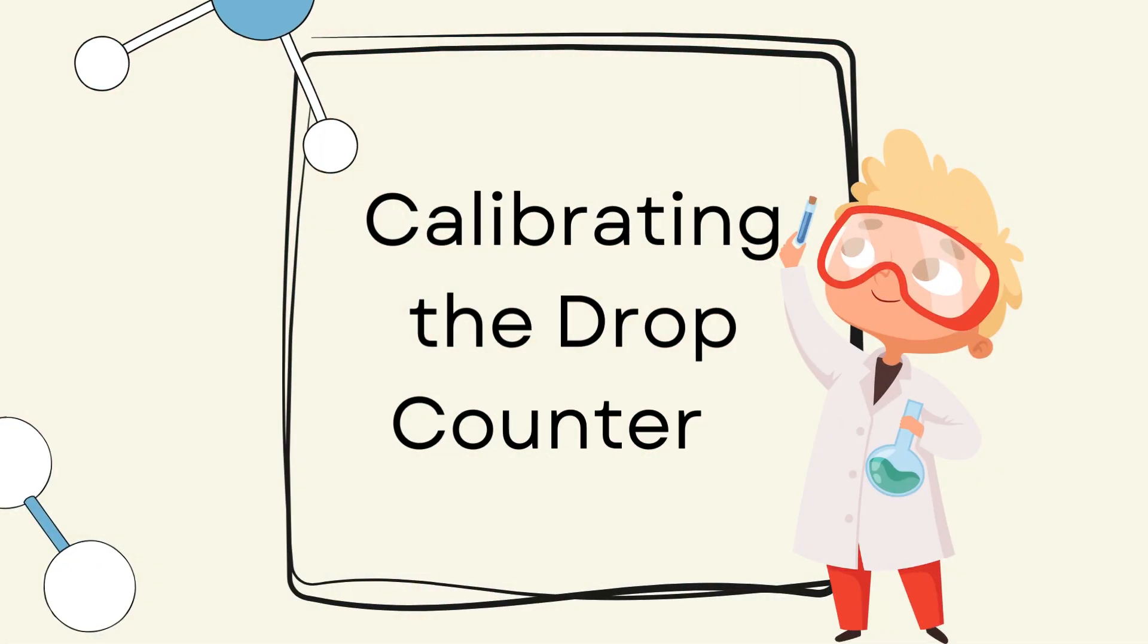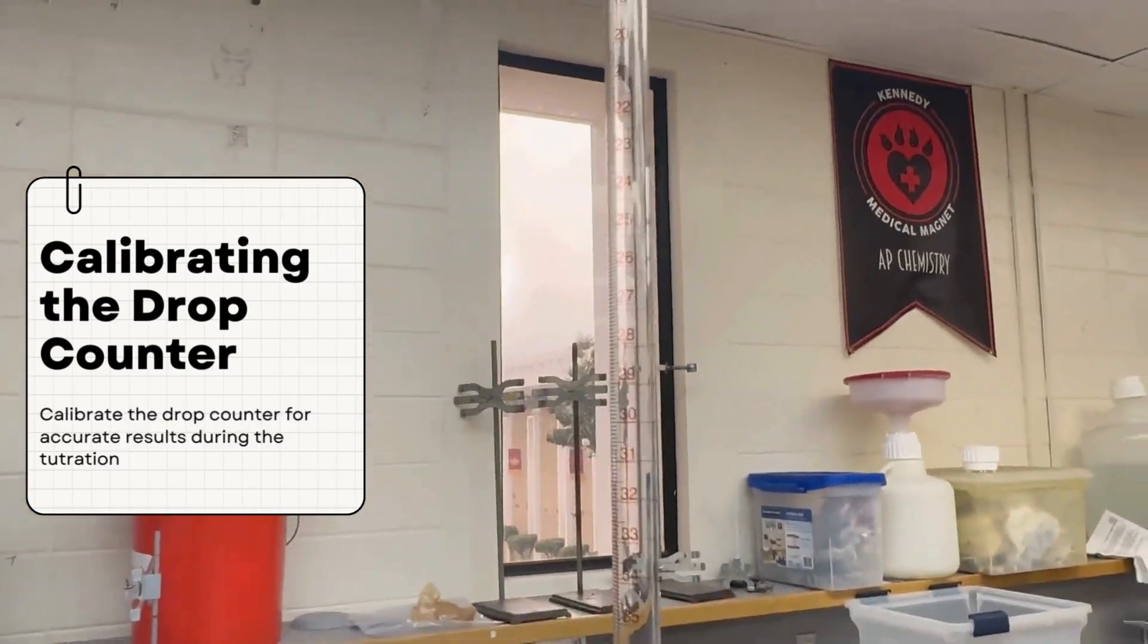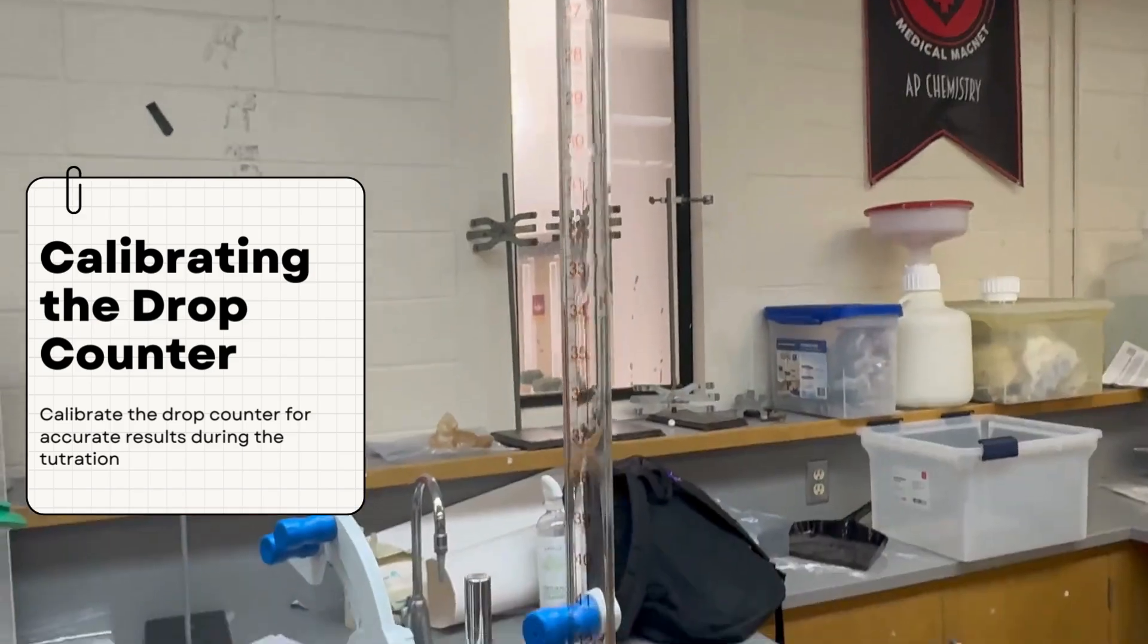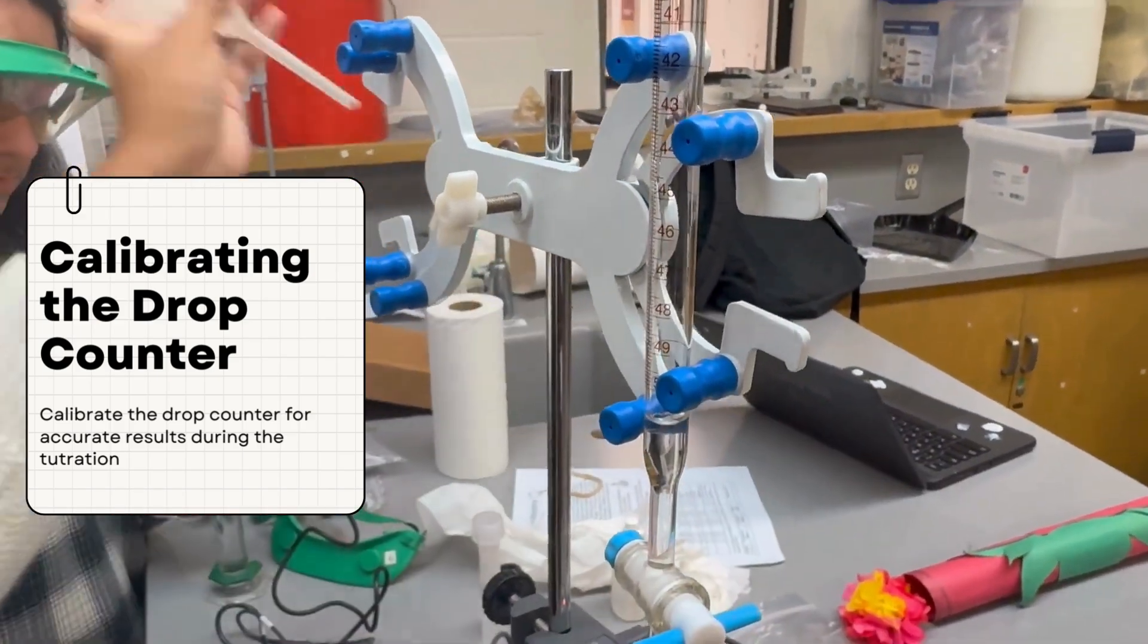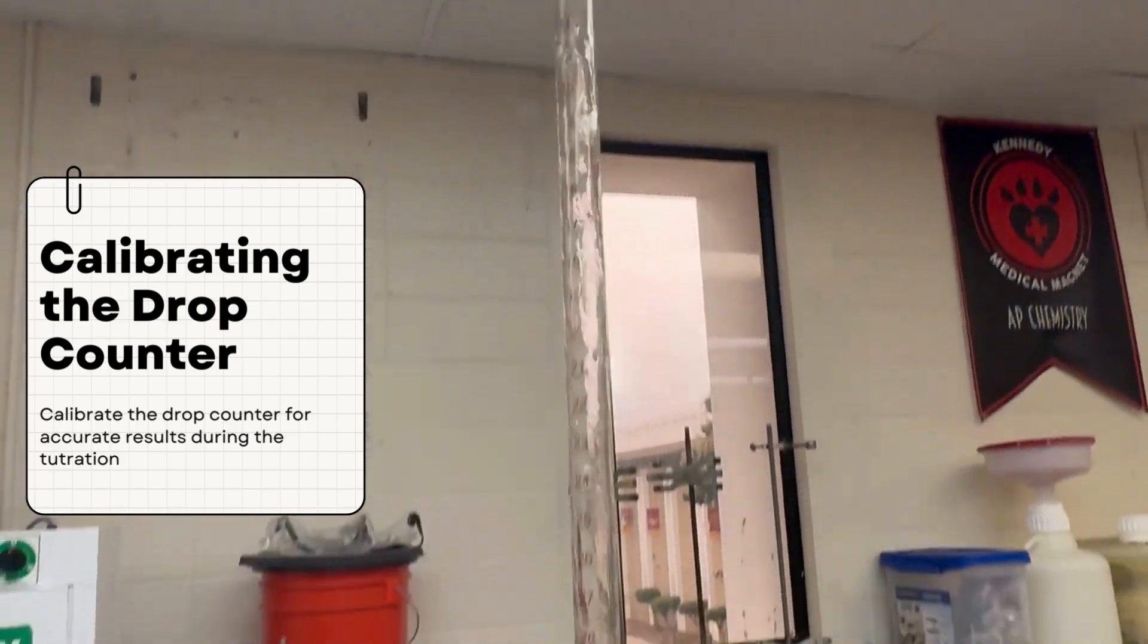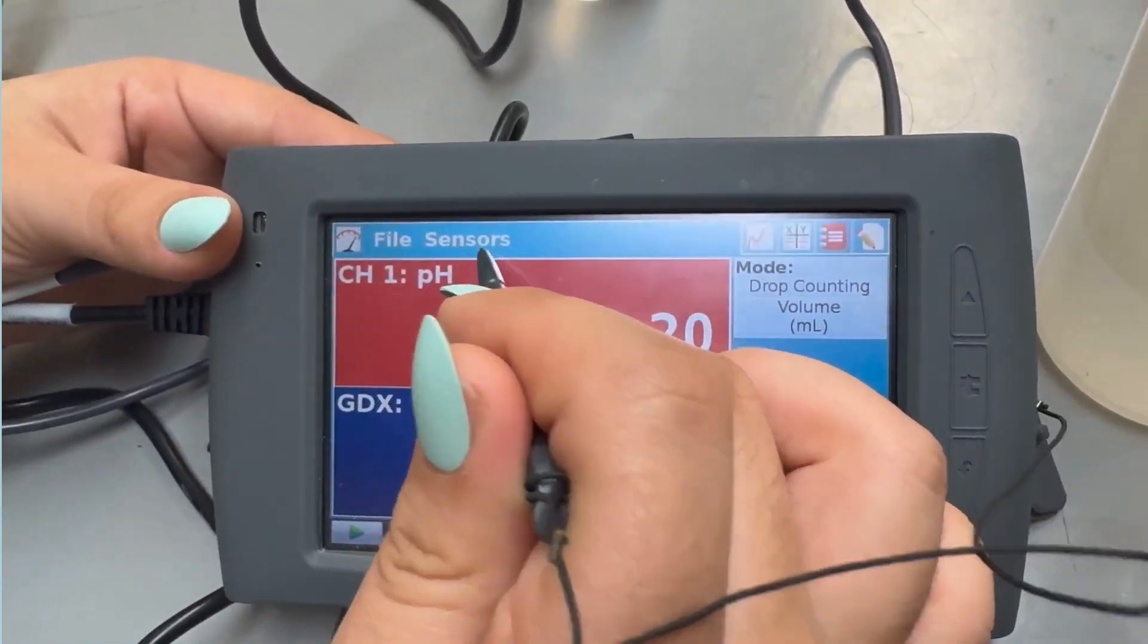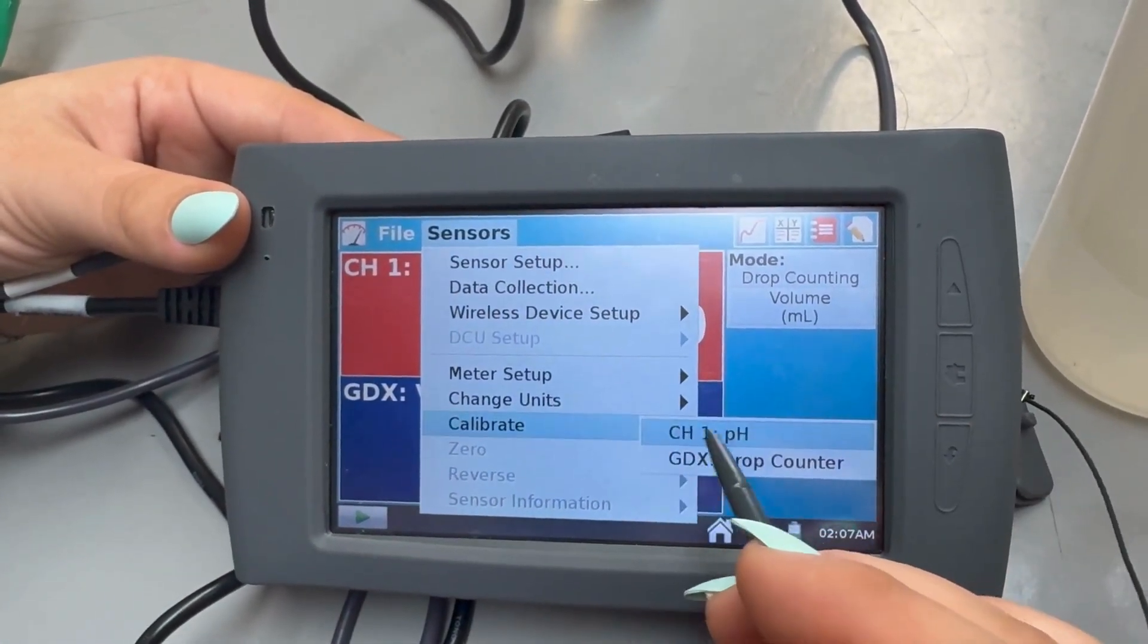Calibrating the drop counter. To set up the lab quest, plug in your drop counter and pH meter and calibrate both to ensure that there are no malfunctions occurring with the tools. Reference the drop counter video for more assistance.